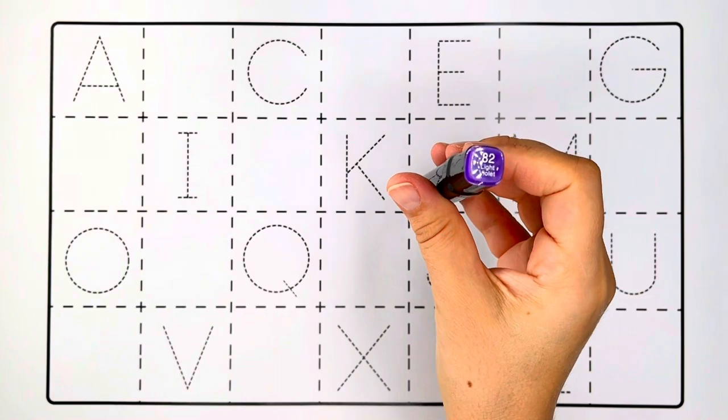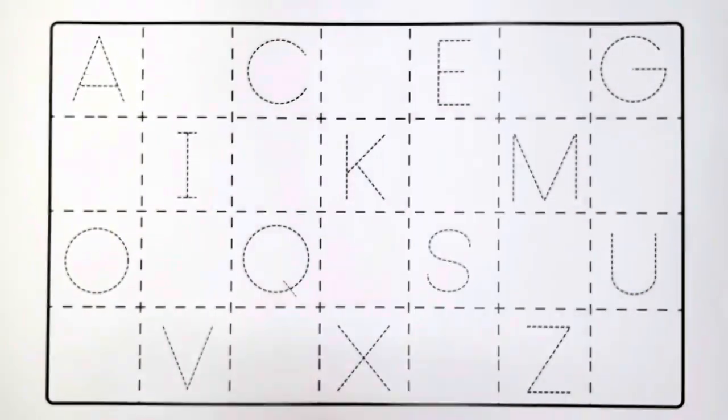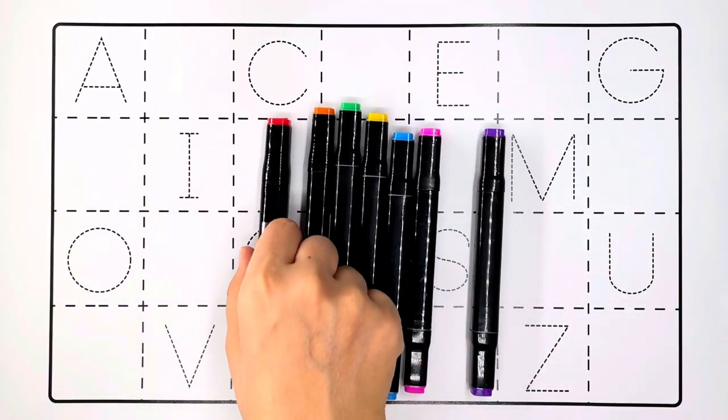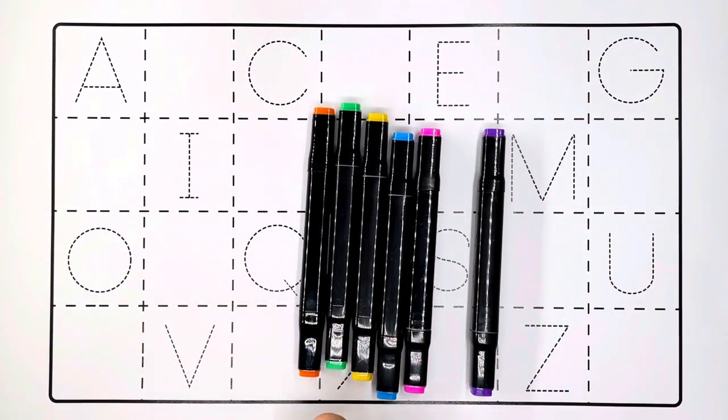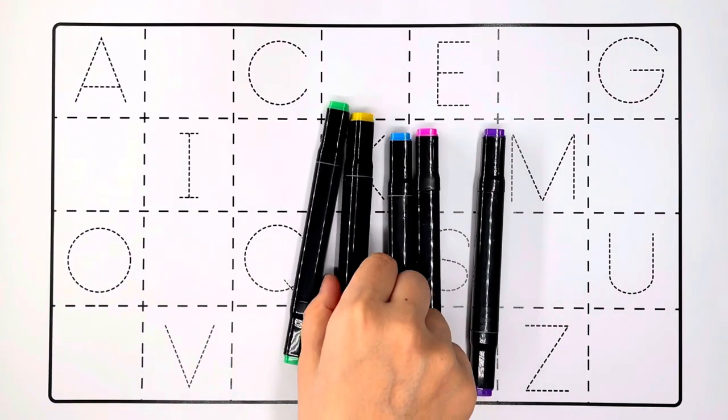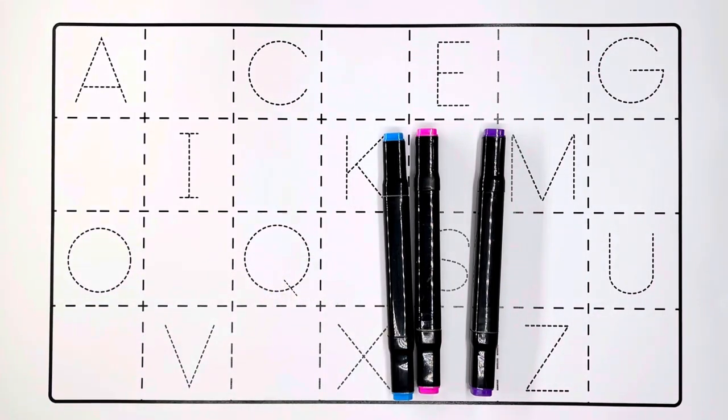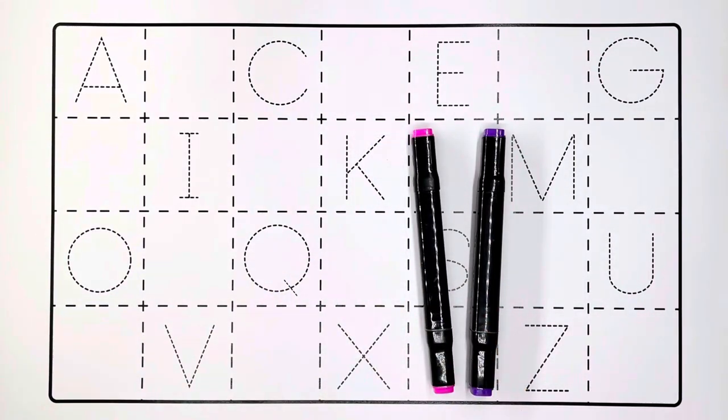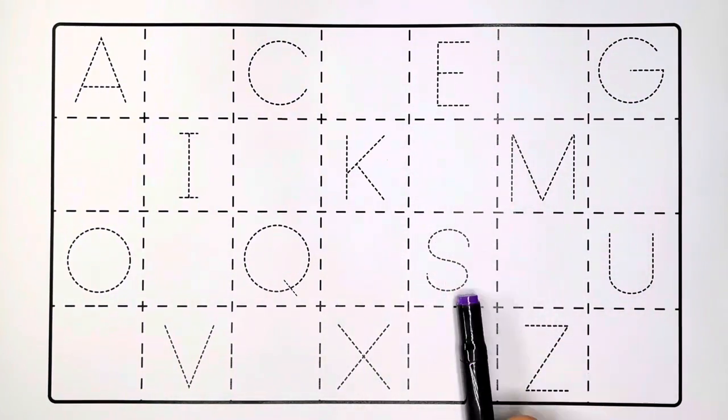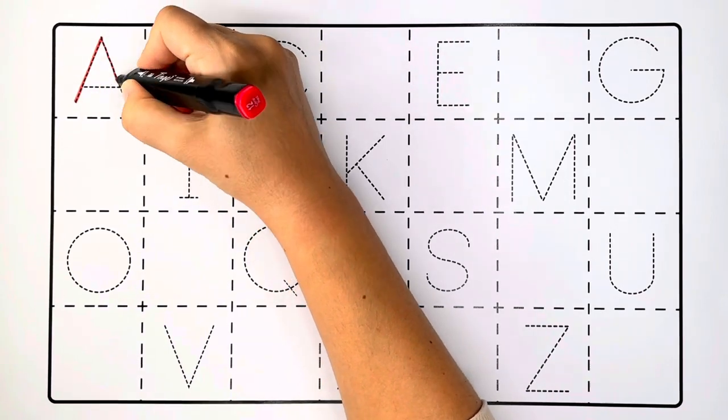Purple color, pink color. Repeat the colors with me: red color, orange color, yellow color, green color, blue color, pink color, purple color. Now let's learn the alphabet from A to Z together.